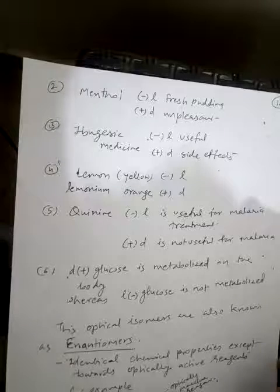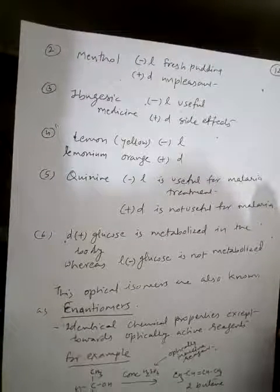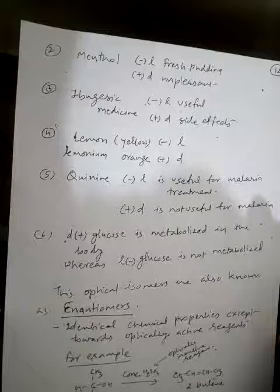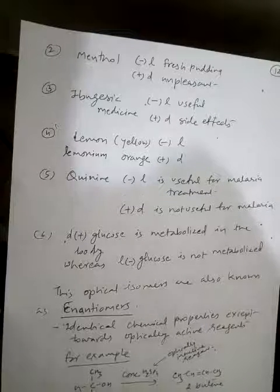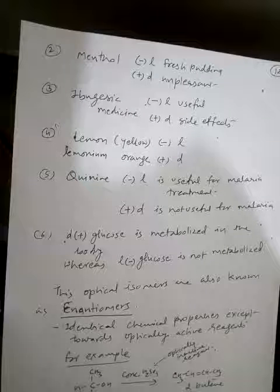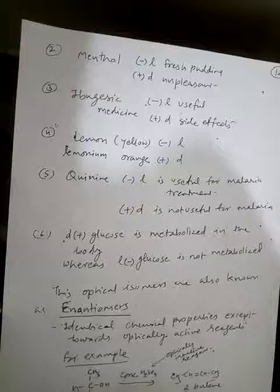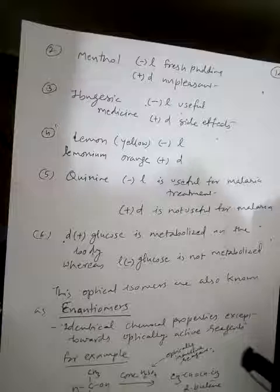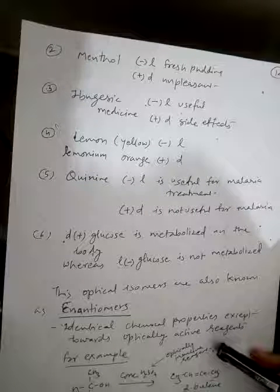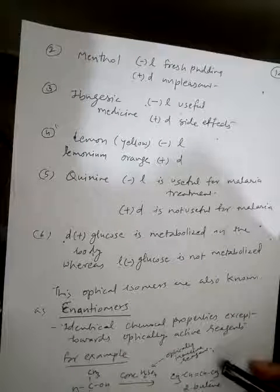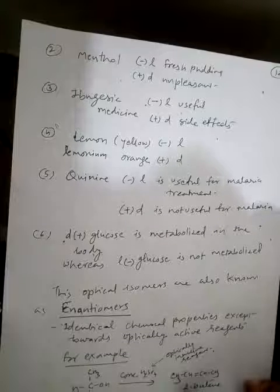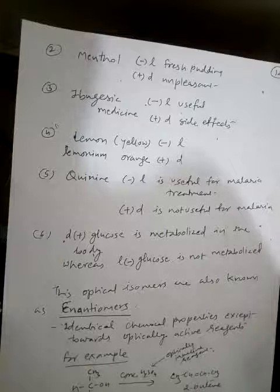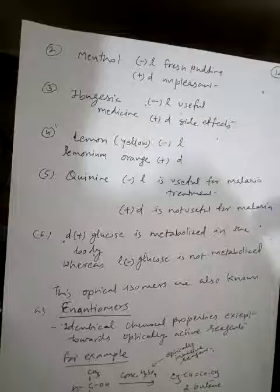Optical isomers are also known as enantiomers. They have identical chemical properties except towards optically active reagents. For example, with 2-butanol: when treated with concentrated sulfuric acid, which is an optically inactive reagent, both enantiomers behave identically. But when 2-butanol is treated with optically active lactic acid, a differentiation in the rate of the esterification reaction is observed.